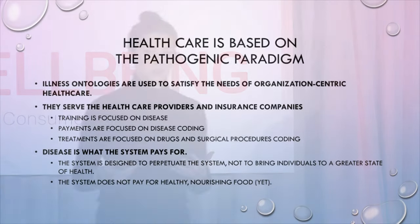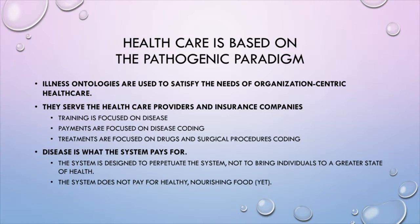Healthcare right now isn't doing a great job on chronic disease because it's based on a pathogenic paradigm. Disease is what the system pays for, and illness ontologies like MESH and ICD-9 are designed to serve healthcare providers and insurance companies — not the patient and consumer. The system doesn't pay for healthy, nourishing food. It doesn't pay for wellness right now. But it's starting to change.